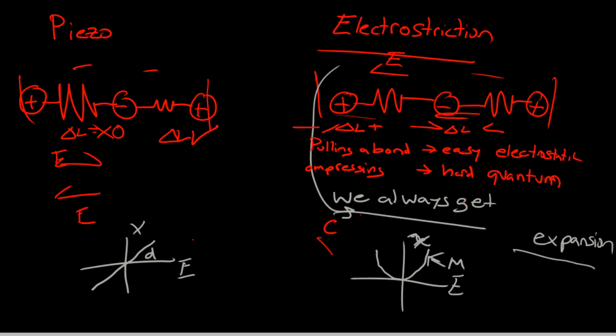This slope is the D constant for piezoelectricity, and this slope will be characterized by another constant M for electrostriction. So this is a linear relationship — just reminding you of it, this is the linear slope.